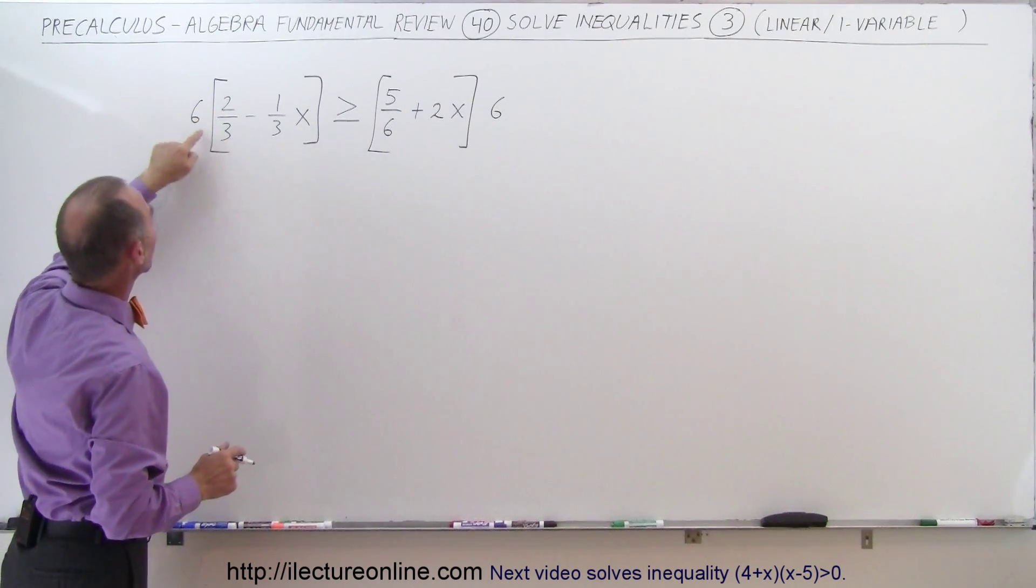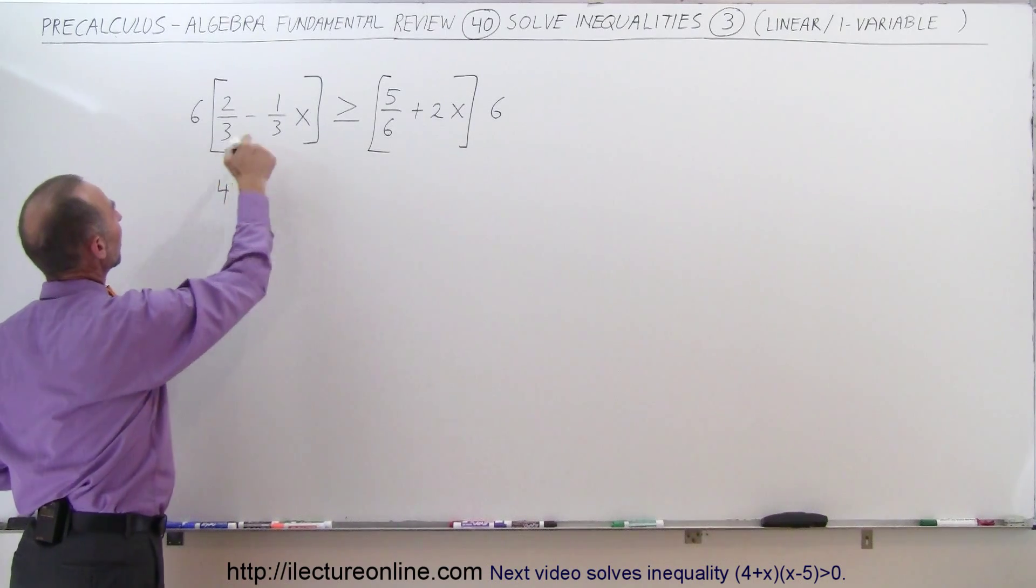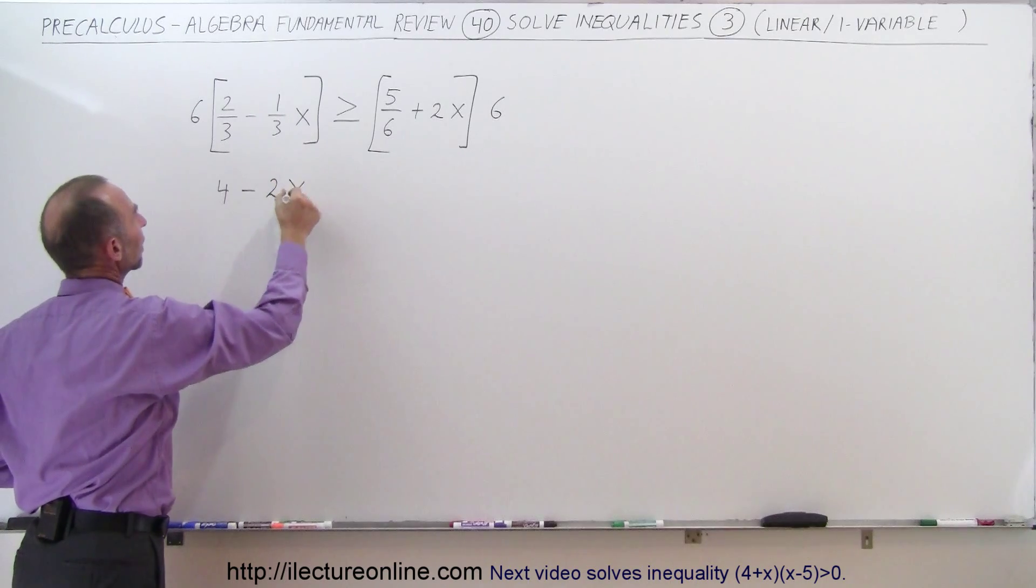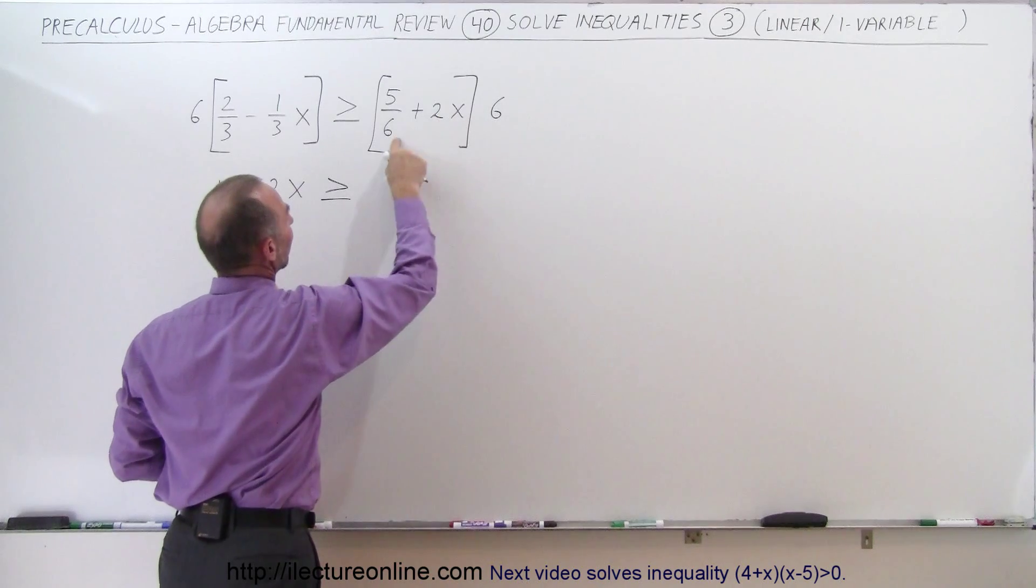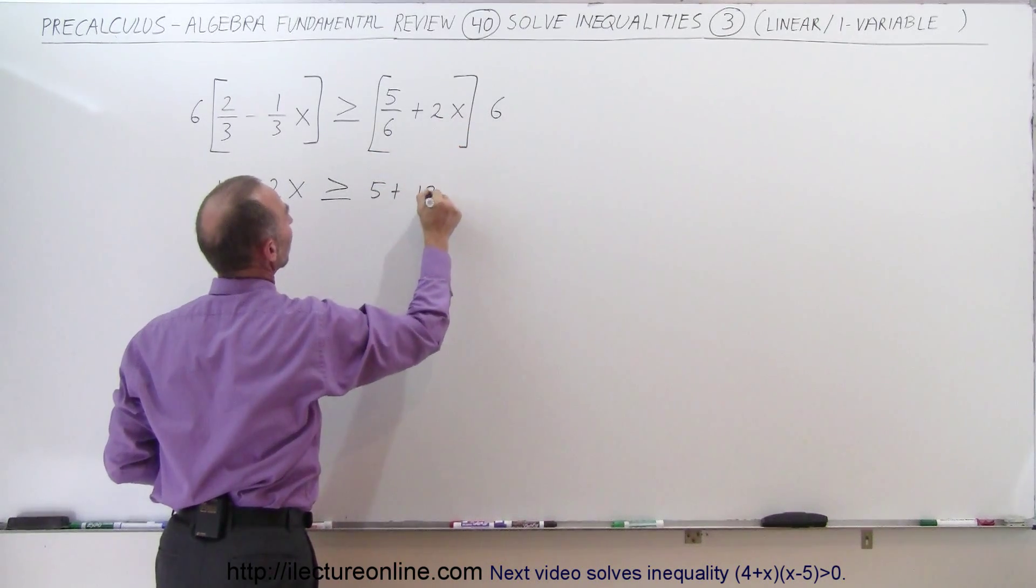6 times 2 thirds - well 3 goes into 6 two times, 2 times 2 is 4, so we get a 4 minus... 3 goes into 6 two times, 2 times 1 is 2 times x, greater than or equal to... 6 times 5 sixths, the 6's cancel out, so we end up with 5 plus 6 times 2 is 12x.